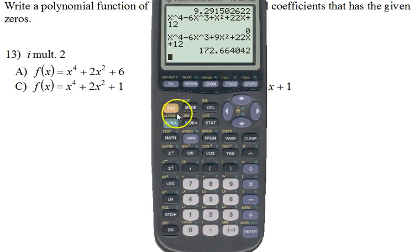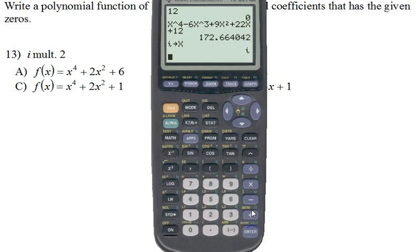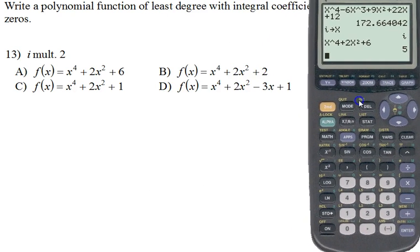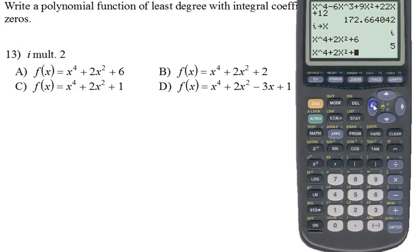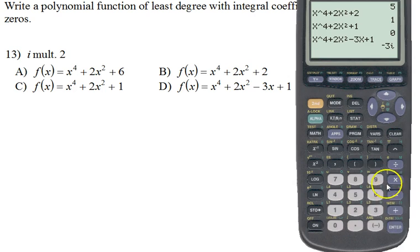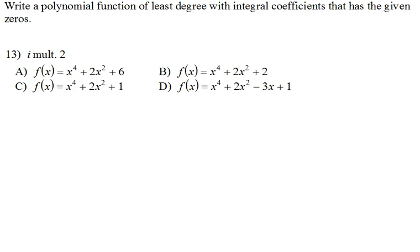We want to plug in i for x. x to the fourth plus 2x squared plus 6. It doesn't give me zero, it's got to give you zero for it to be the answer. What about plus 2? That gives me 1, that's not good enough. Plus 1, we're getting closer. That one gives me zero. But I do want to check the last one just to be safe. Minus 3x plus 1. It doesn't give you zero, it gives me an imaginary number. So C is a very popular answer here.